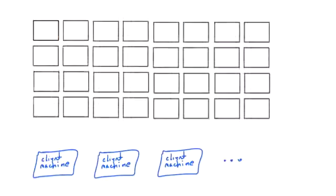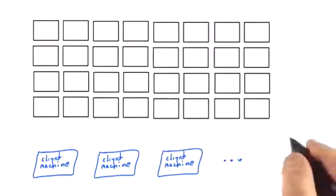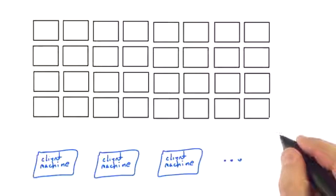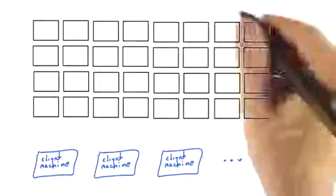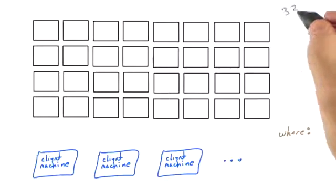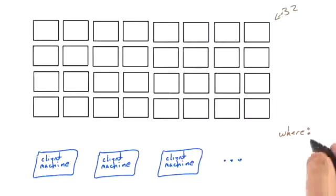There's a couple things you could do. Imagine we have some clients down here, client machines. Maybe these are app servers or something else. And we have our machines up here we're going to use to form the basis of our Mongo sharded cluster. It looks like we have 32 total machines here to work with.